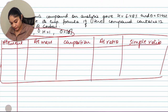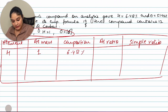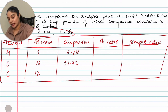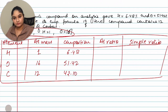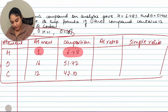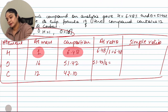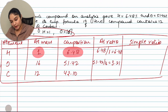Elements: hydrogen (atomic mass 1, composition 6.48%), oxygen (atomic mass 16, composition 51.42%), and carbon (atomic mass 12, composition = 100 − 6.48 − 51.42 = 42.10%). Atomic ratio: H = 6.48 ÷ 1 = 6.48; O = 51.42 ÷ 16 = 3.21; C = 42.10 ÷ 12 = 3.51.